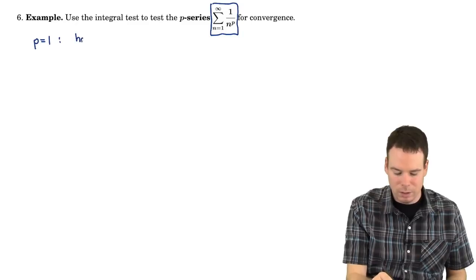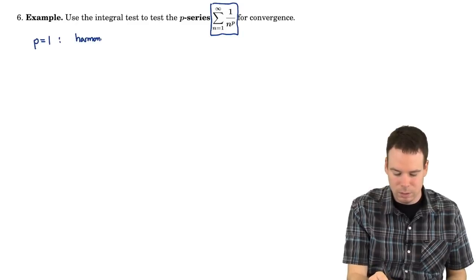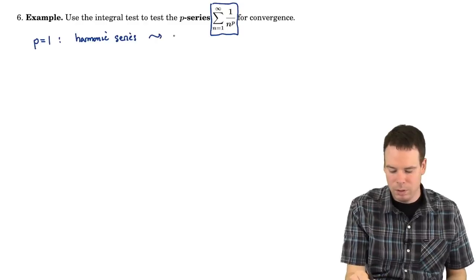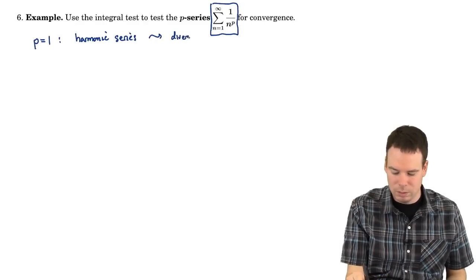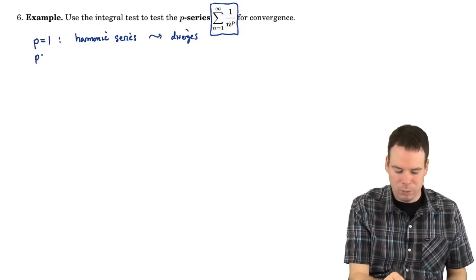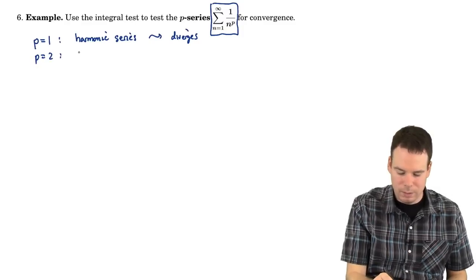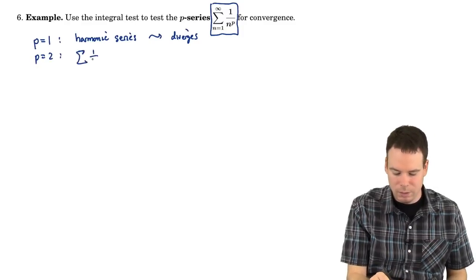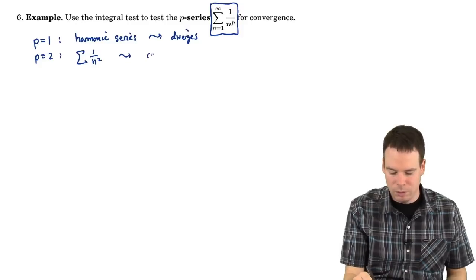When p equals 1, this is the harmonic series and we know that it diverges. When p equals 2, this is the series 1 over n squared and we know that it converges.